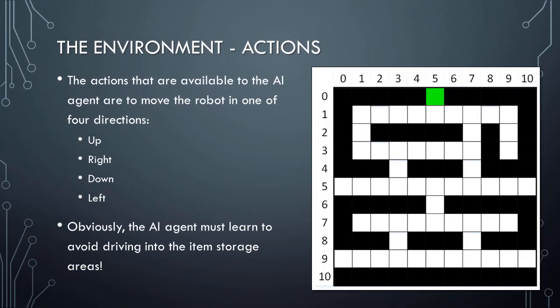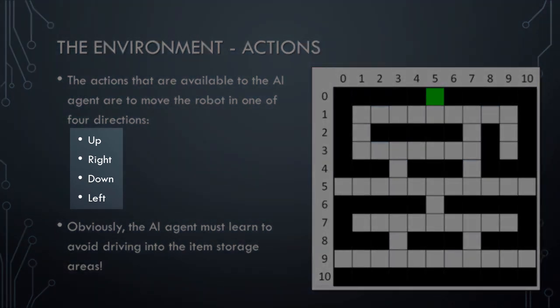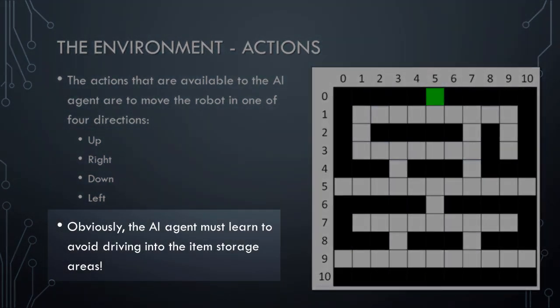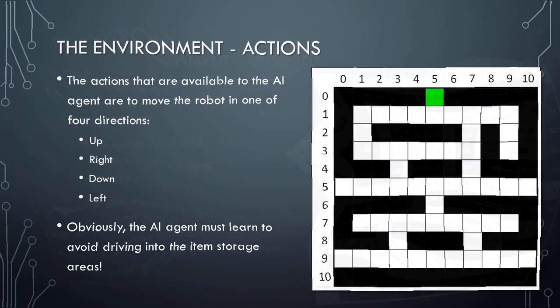Next, let's briefly discuss actions. The actions that are available to the AI agent in our scenario are simply to move the robot in one of four directions – up, right, down, or left. The AI agent will need to learn to choose actions that will prevent the robot from crashing into the item storage areas.